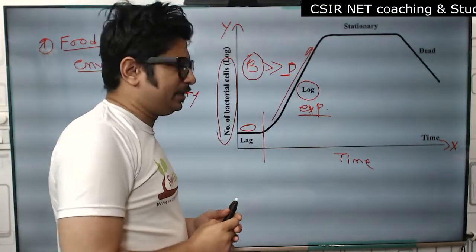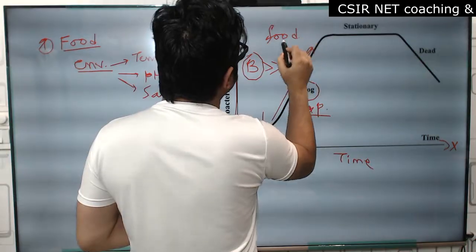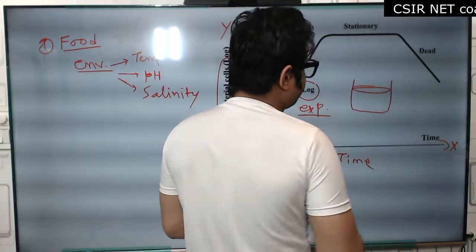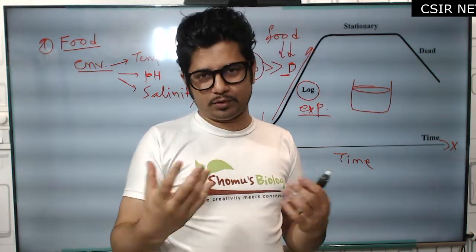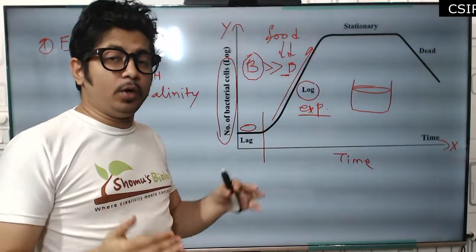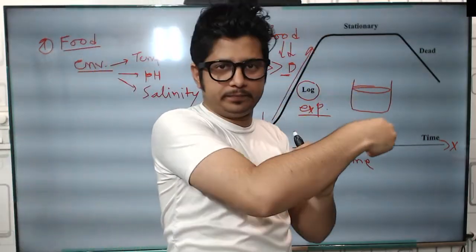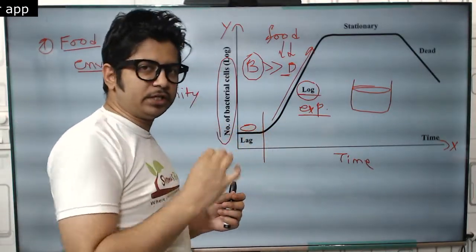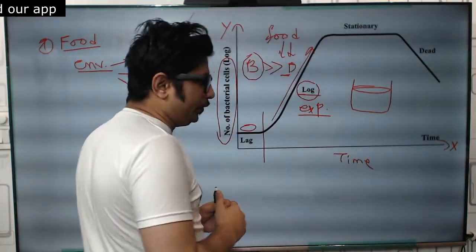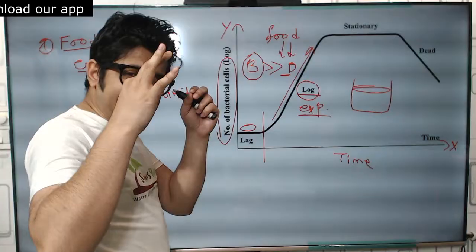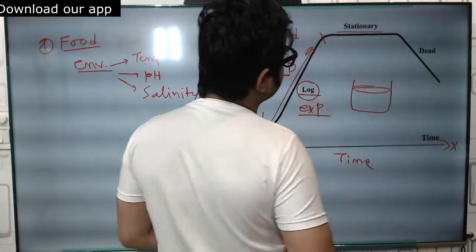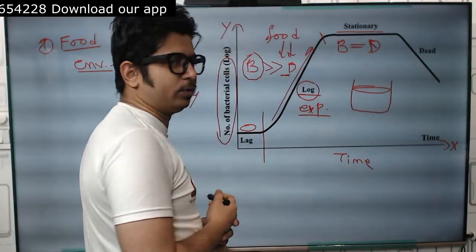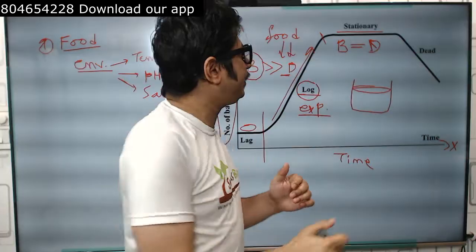During log phase, there must be a continuous supply of food. If we allow bacteria to grow in a closed liquid medium, the bacteria will grow but there is a limitation of food because we are not adding more. When food is adequate, bacteria continue to grow exponentially. But once the food reaches its limit, bacteria stop growing. The bacteria then reach what is known as the stationary phase, where birth rate is almost equal to the death rate — no net growth. That's why the curve appears flat.